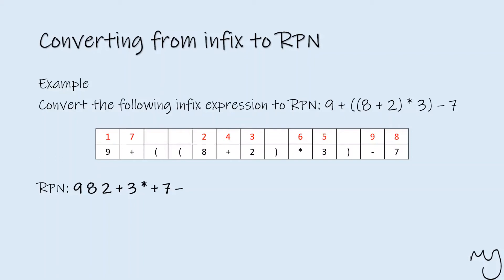If you write these values out in the order that you've numbered them, you will have your Reverse Polish Notation expression with regards to the infix expression we had. The answer is 9 8 2 plus 3 multiplied plus 7 minus.